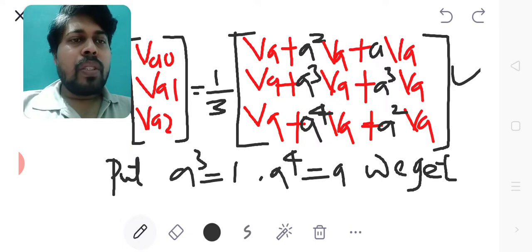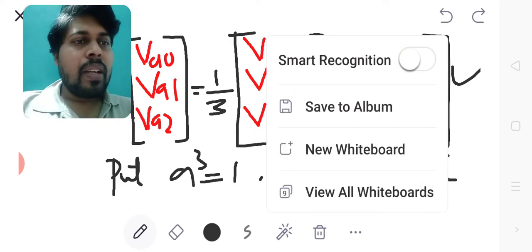By putting A cube equals 1 and A raised to 4 equals A, as it is based on the A operator, I will further get the simplified form.